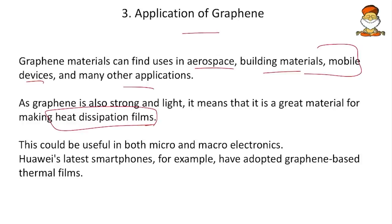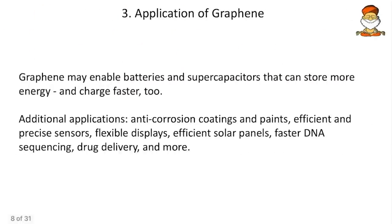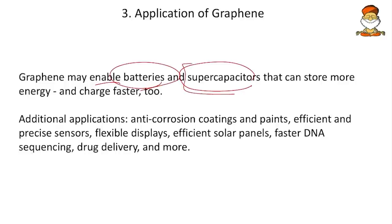Graphene can be used as a conductor in both electricals and electronics. Huawei's latest smartphones, for example, have adopted graphene-based thermal films as heat sinks. Graphene may also enable batteries and supercapacitors — it can store more electrical energy, not only heat. This makes it the best material for capacitors and batteries, enabling advanced battery technology and supercapacitors.